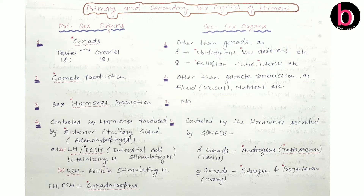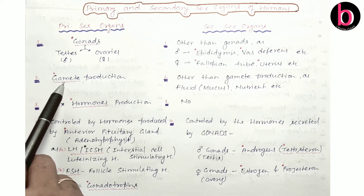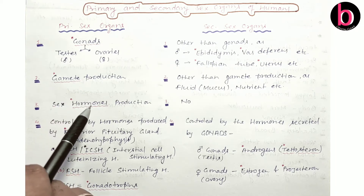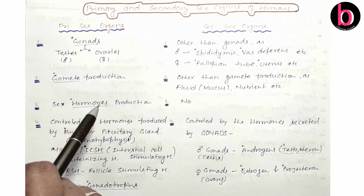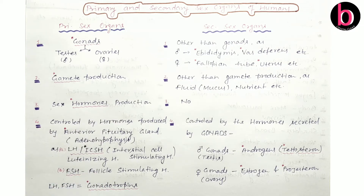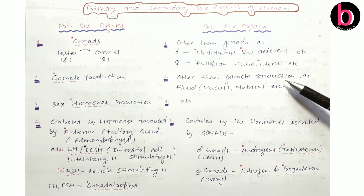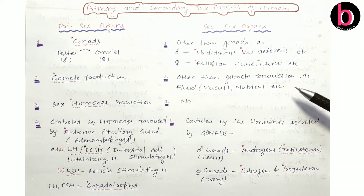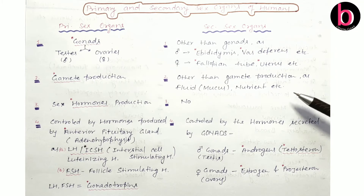Now, what is the basis on which we can differentiate between them? Primary sex organs are those which are related with the production of gametes as well as the production of sex hormones. While secondary sex organs are not related with gamete production or hormone production, but they produce some nutritive substances as well as lubricants that help with the movement of sperm and ovum and for their nutritional purpose.